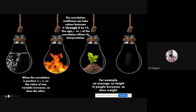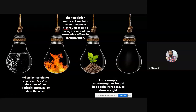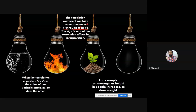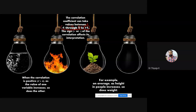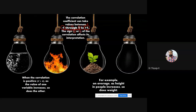The limit of the correlation value is plus or minus one, going from minus one through zero to plus one. Zero is called zero correlation. Zero to one is called positive correlation. Zero to minus one is called negative correlation. A score of plus one is called perfect positive; minus one is called perfect negative. The plus sign denotes positive correlation and the minus sign denotes negative correlation.